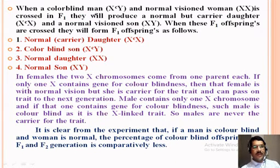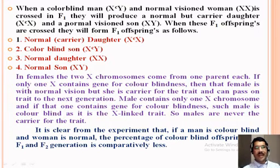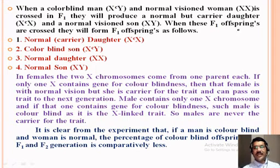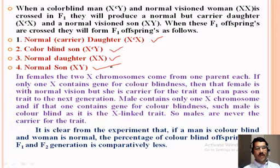Now we will see the conclusion. When a color blind man X^c Y and a normal vision woman XX are crossed, F1 produces a normal but carrier daughter X^c X and a normal vision son XY. When these F1 offspring are crossed, they form four types in F2: a normal but carrier daughter, a color blind son, a normal daughter, and a normal son.